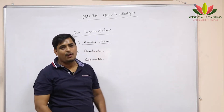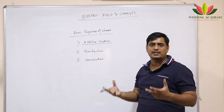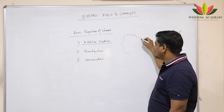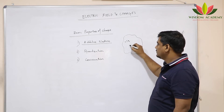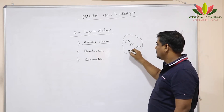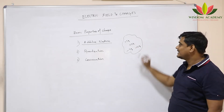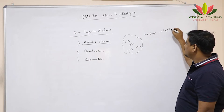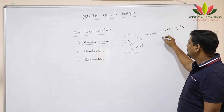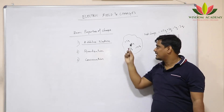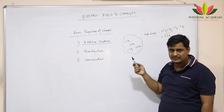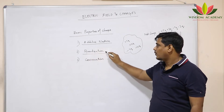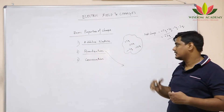For example, if a body has charges +5q, +3q, −4q, and −2q present on its surface, then the net charge will be the algebraic addition: +5q + 3q − 4q − 2q = +2q. So a body which has +5q, +3q, −4q, and −2q charge on its surface has a net charge of +2q. This is the additive nature of charge.